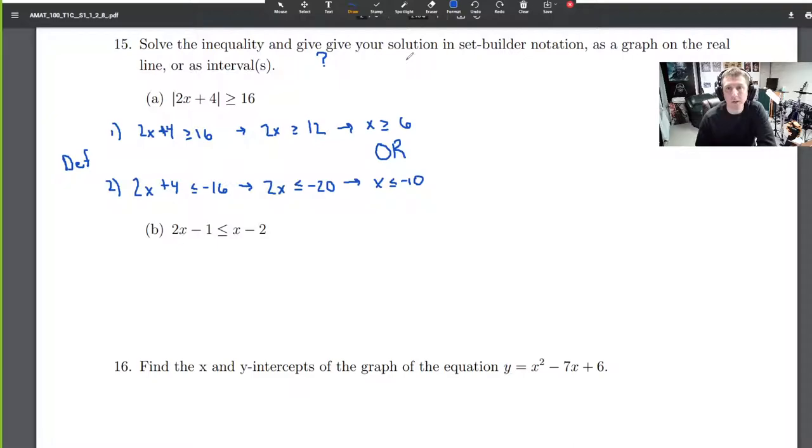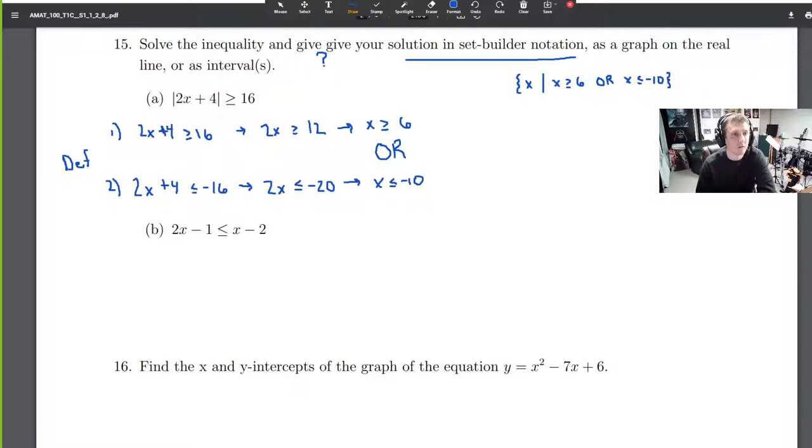So there we have it. We're not quite in set builder notation yet, but we're close. Let's do the three different solutions here. In set builder notation, it's the set of all x such that x is greater than or equal to 6, or x is less than or equal to -10. And that's it in set builder notation.